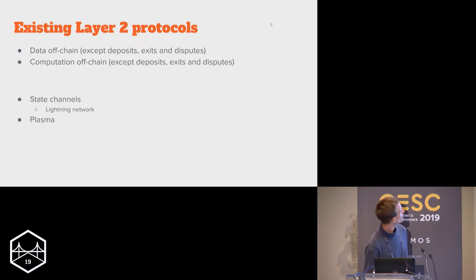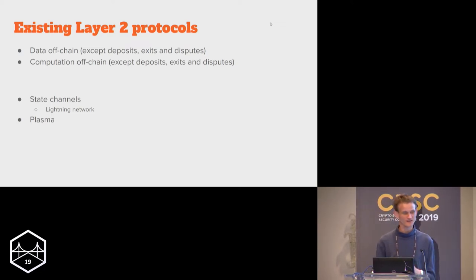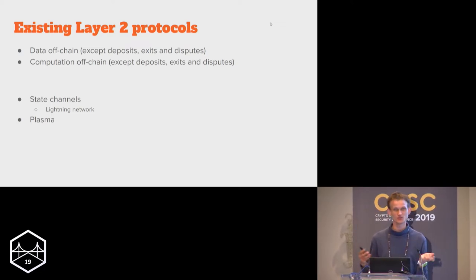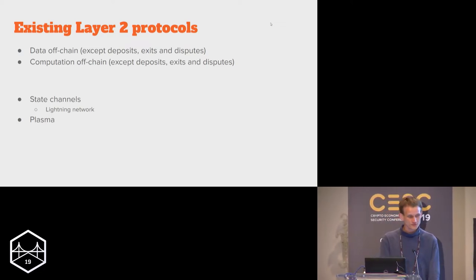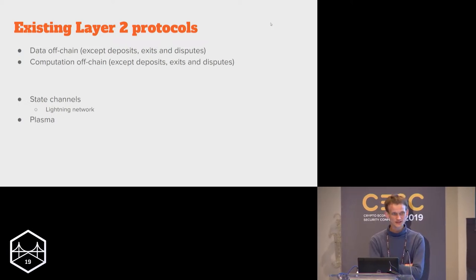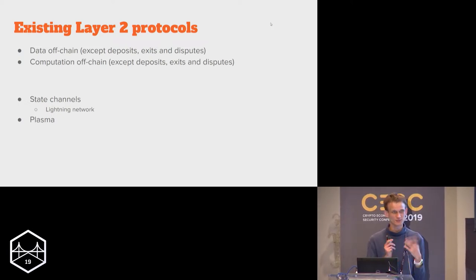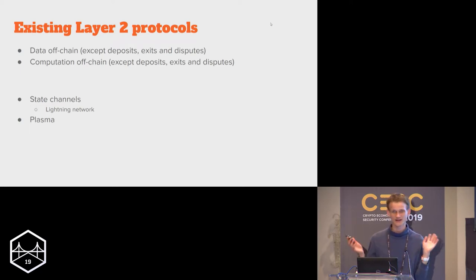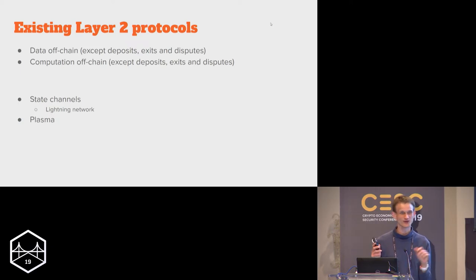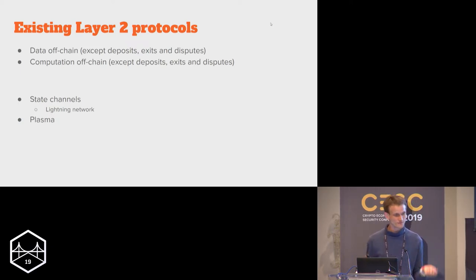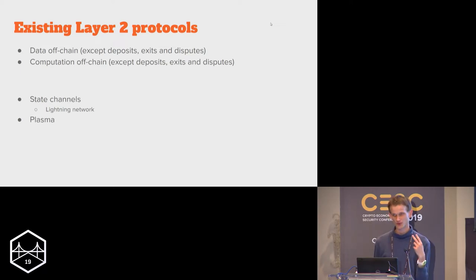So first of all, let's take a look at existing layer two protocols. When we look at things like Plasma, state channels, Raiden, the Lightning Network, Plasma Prime, Plasma Cache Flow, all of these different flavors, there are two ways in which they are off-chain protocols.